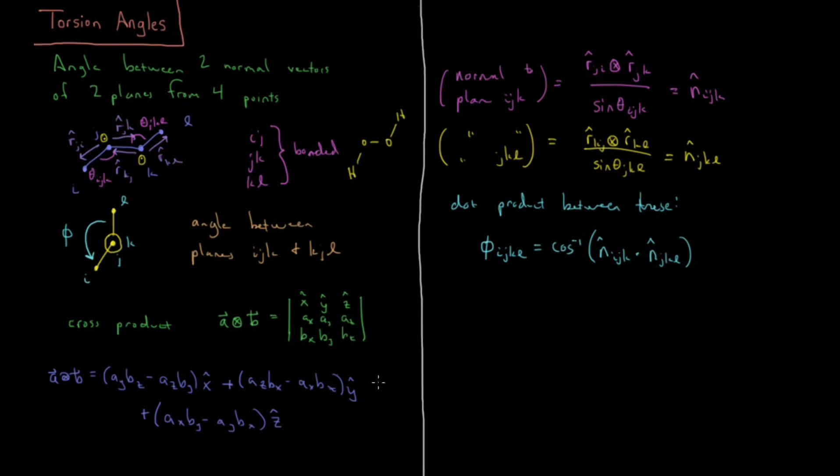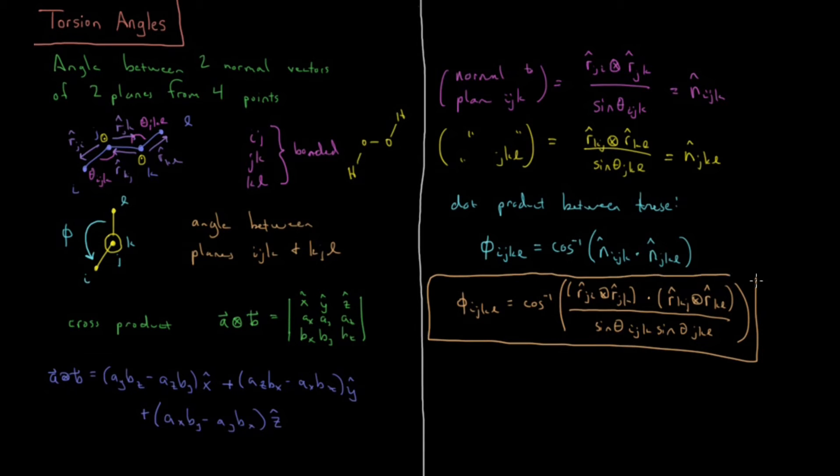So substituting in these original values here, what we're going to get for our final value is that phi I, J, K, L is equal to the arc cosine of R-hat J, I cross R-hat J, K dot R-hat K, J cross R-hat K, L, have we had enough vector algebra yet? Divided by sine theta I, J, K times sine theta J, K, L. So that is our final result there, in those terms.